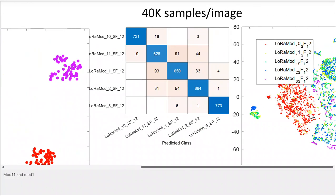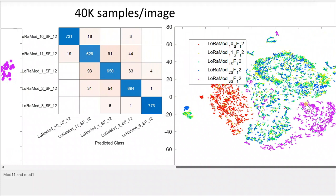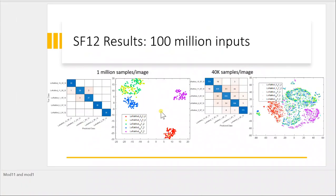The red cluster has a lot of overlap with the light green. Device 10 is the red, and device 11 is the light green. Device 11 is classified as device 10 about 16 times, and another 19 times as 10. There is also error between device 1 and device 11 — the light green and the dark green are heavily overlapping. So yes, t-SNE gives us a good indication of classification performance.